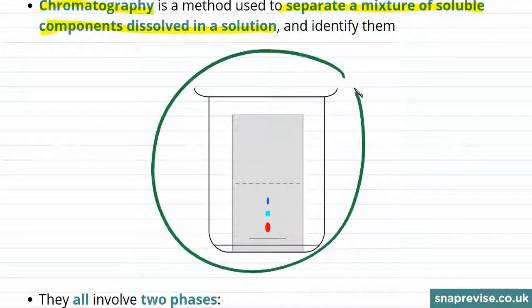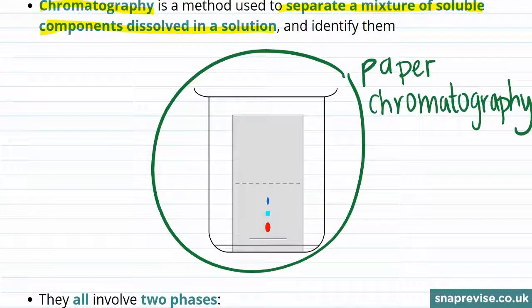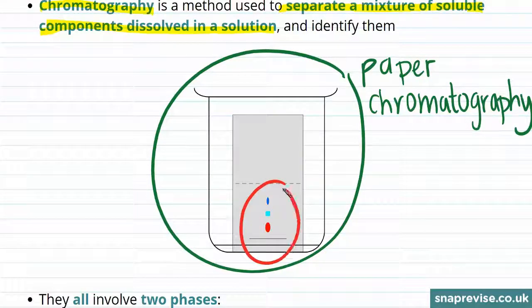In this picture we have an example of the setup used in paper chromatography which we will explain in detail later on in this video. You can also see that the components of our mixture have been separated into three distinct components.